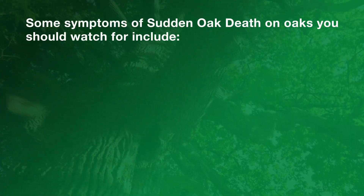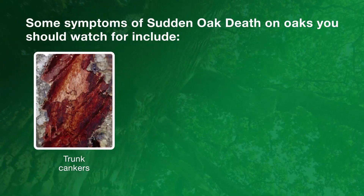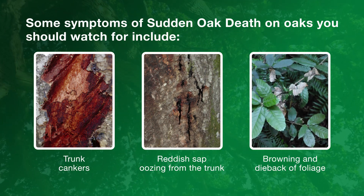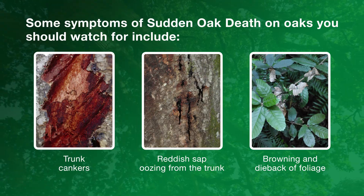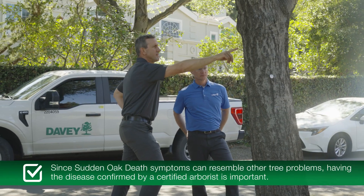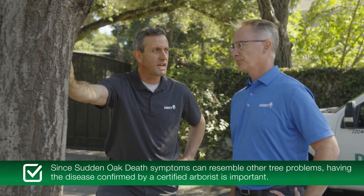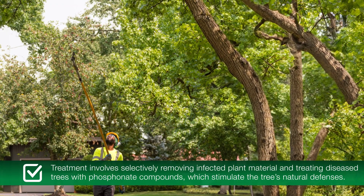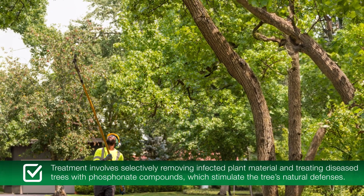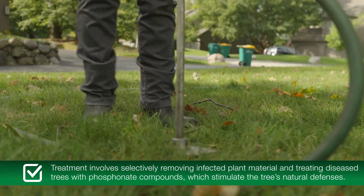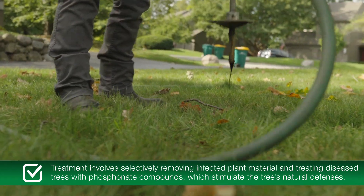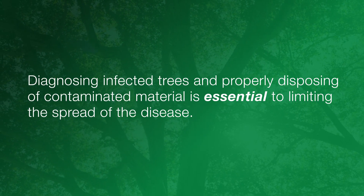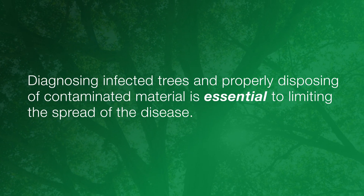Some symptoms of sudden oak death on oaks include trunk cankers, reddish sap oozing from the trunk, browning and dieback of foliage, and premature dropping of leaves. Since sudden oak death symptoms can resemble other tree problems, having the disease confirmed by a certified arborist is important. Treatment involves selectively removing infected plant material and treating diseased trees with phosphonate compounds, which stimulate the tree's natural defenses. Diagnosing infected trees and properly disposing of contaminated material is essential to limiting the spread of the disease.